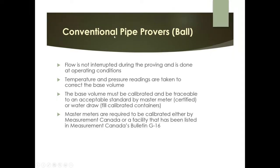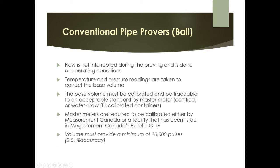The prover volume must provide a minimum of 10,000 pulses — an important number that comes up repeatedly. The reason: more pulses increases resolution, and higher resolution yields better accuracy. Every zero removed from the pulse count shifts the accuracy accordingly. 10,000 pulses is the established minimum standard.